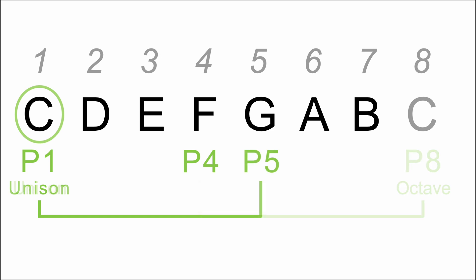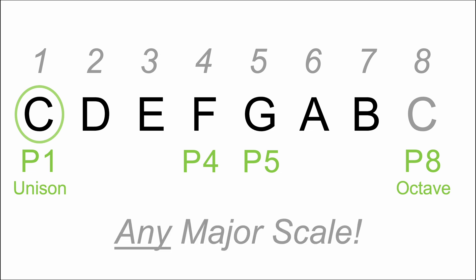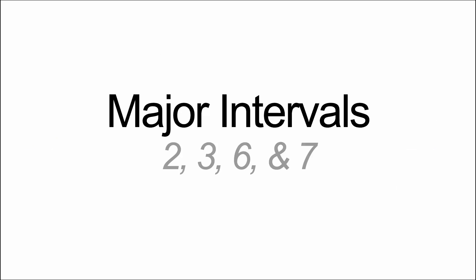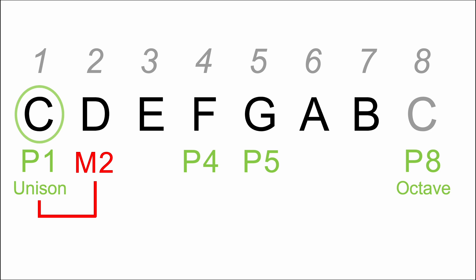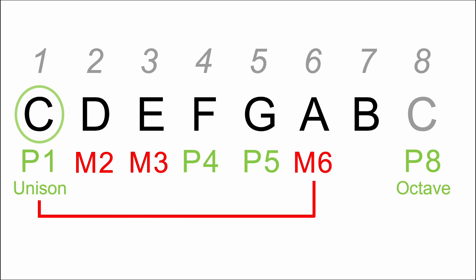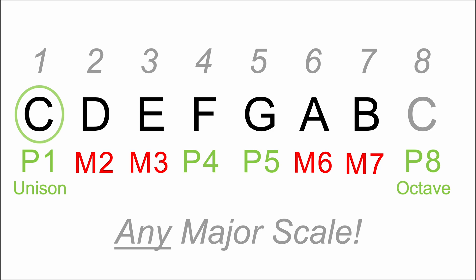Looking at our major scale, we have scale degrees one through eight. The first, fourth, fifth, and eighth scale degrees are perfect intervals. So C to C is our perfect unison, the fourth and fifth degrees are perfect, and the octave is our perfect eighth. That leaves us with the major intervals: the second, third, sixth, and seventh. C up to D is your major second, C up to E is your major third, C up to A is your major sixth, and C up to B is your major seventh. All the non-perfect intervals in your major scale are the major intervals — go figure!